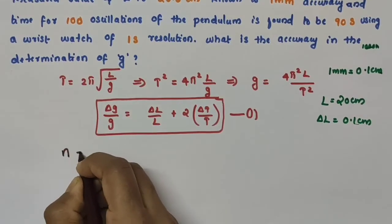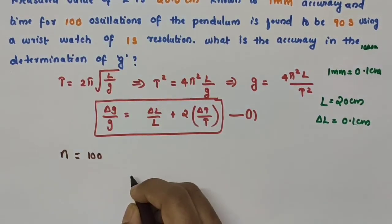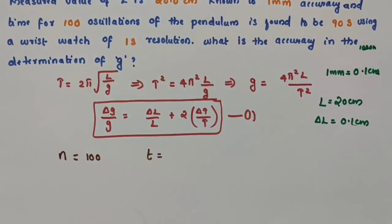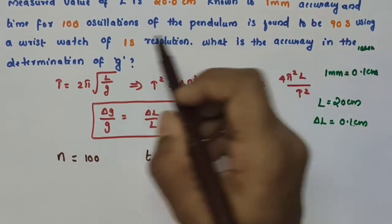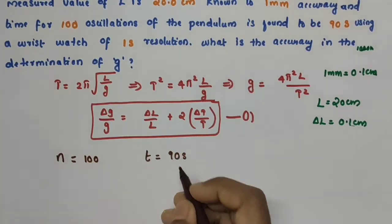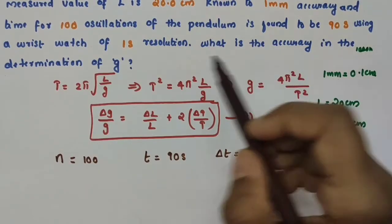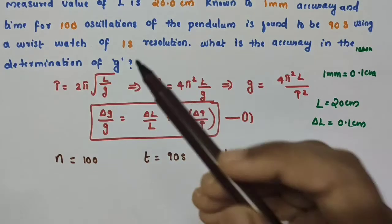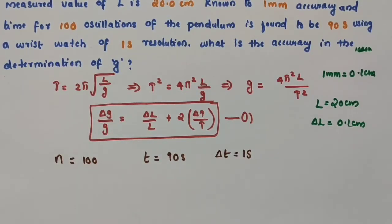Let n be the total number of oscillations, given as 100. The time taken for those 100 oscillations is 90 seconds, so the total time t = 90 seconds. This is measured using a wristwatch of 1 second resolution, so the error δt = 1 second. Therefore t = 90 s, δt = 1 s, and n = 100.